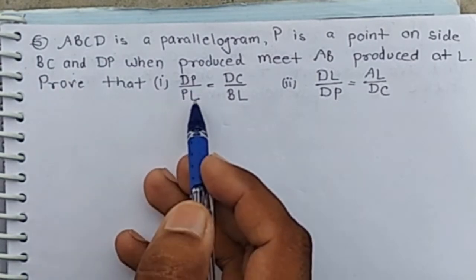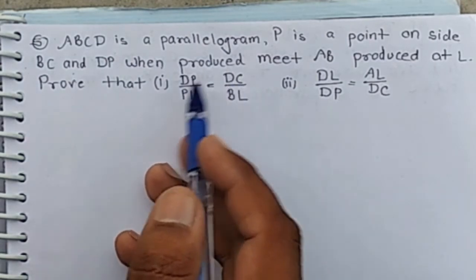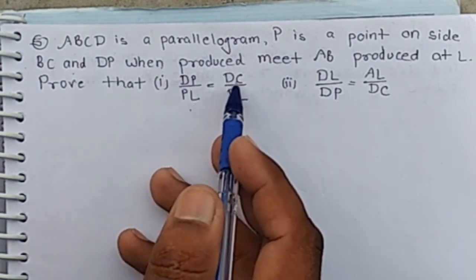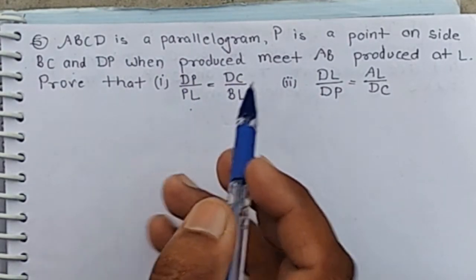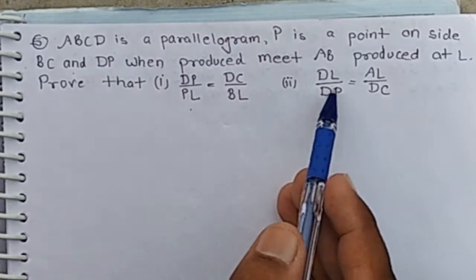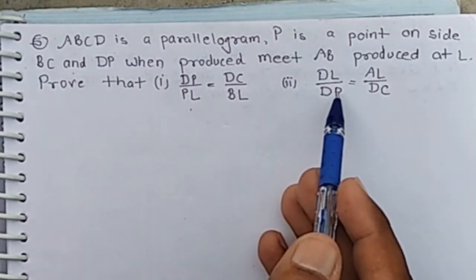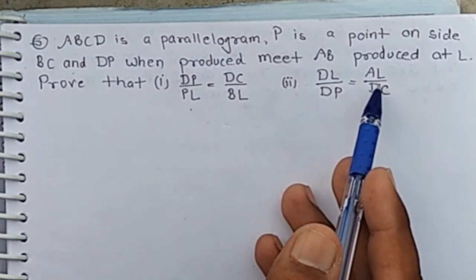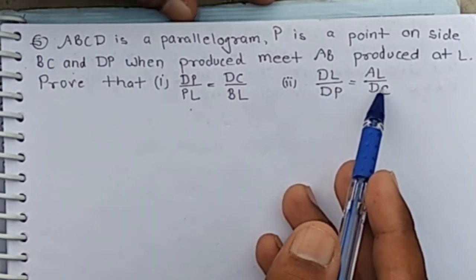Prove that DP by PL equal DC by BL — that is the first part. And the second part: DL by DP equal AL by DC.